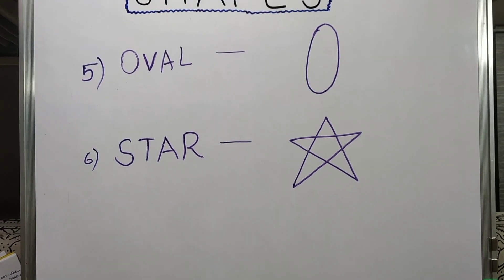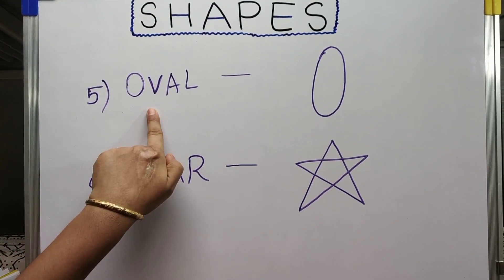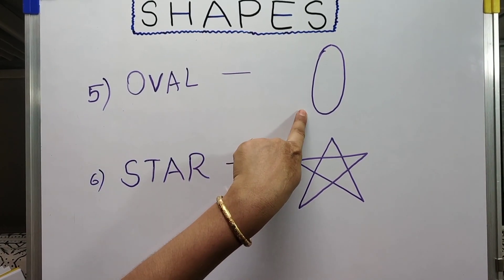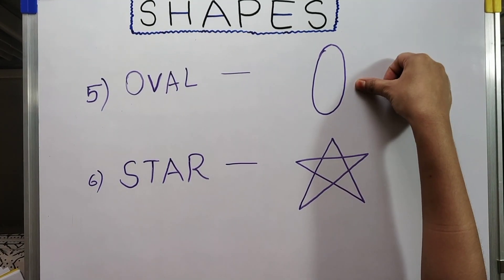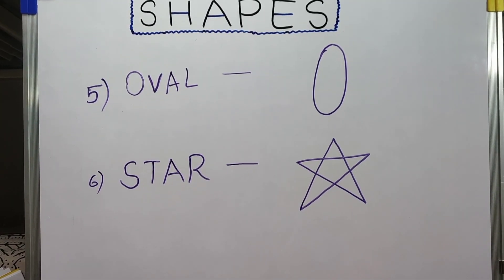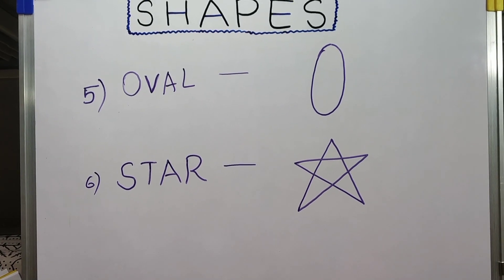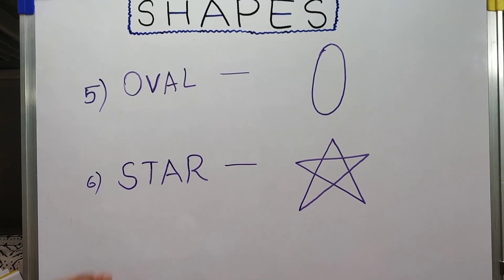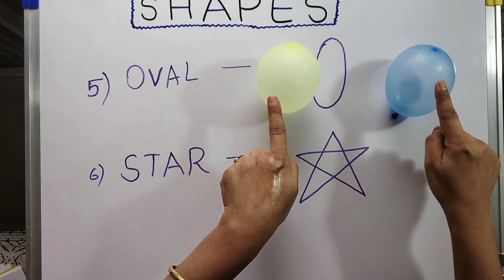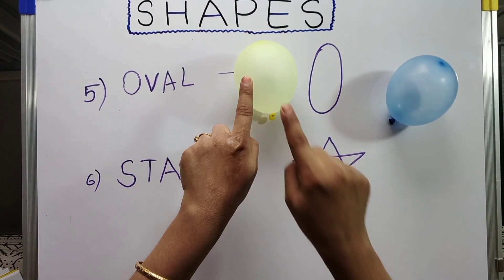Once kids are familiar with those shapes, you can go for the next shape. The next shape to introduce to your children is the oval shape. Make them familiar with the oval shape, and then introduce objects related to it — for example, an egg or their favorite balloons, since balloons are oval in shape.